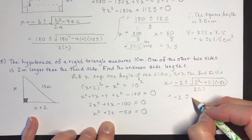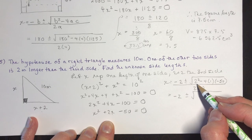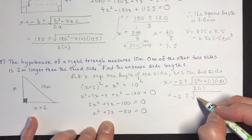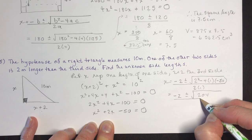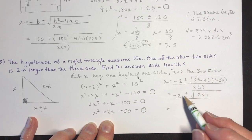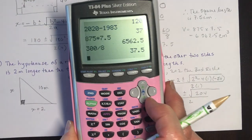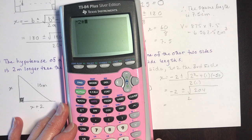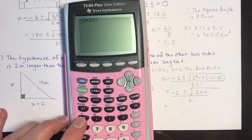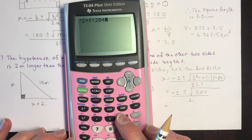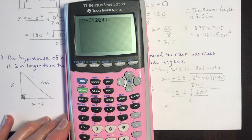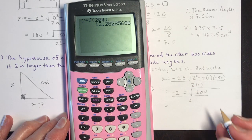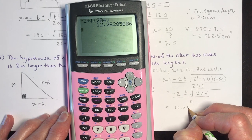Using the quadratic formula: negative b plus or minus the square root of b squared minus 4 times a times c, all over 2 times 1. That gives minus 2 plus or minus the square root of 4 plus 200, which is the square root of 204, all over 2. Computing the numerator: 12.28 divided by 2 gives one solution.